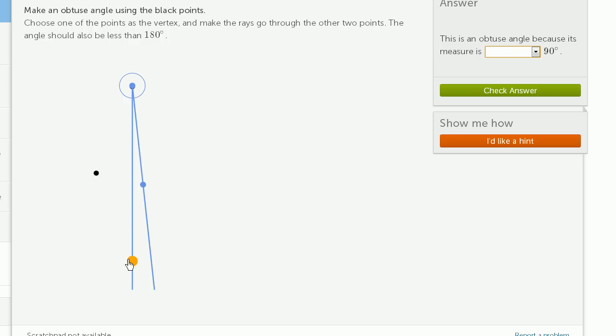You could do something like this, where now when I switch the rays, the tool is now thinking about this angle, not this outer angle right over here. But this is larger than 180 degrees. So this also doesn't apply. We really picked the wrong point for the vertex.